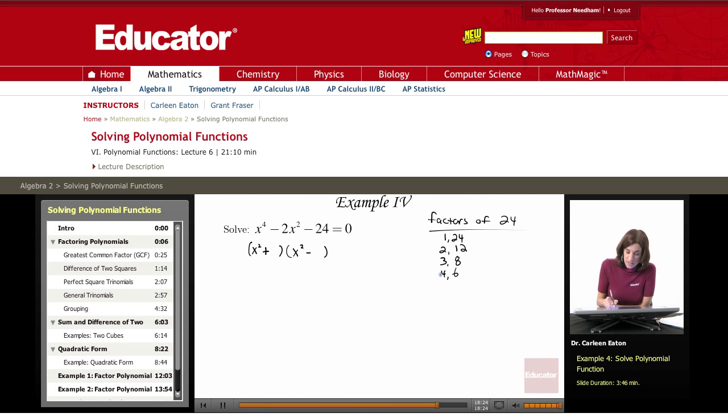So the closest together are 4 and 6, and I see that one is positive and one is negative. If I make 4 positive and 6 negative, their sum will be negative 2. So I know that's what I want—I want the 4 to be positive and I want the 6 to be negative, and this all equals 0.